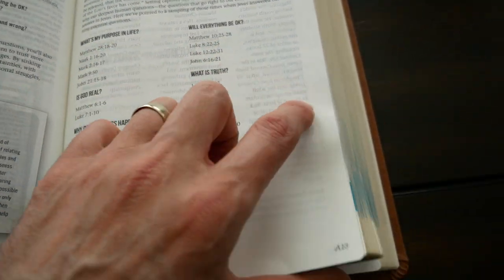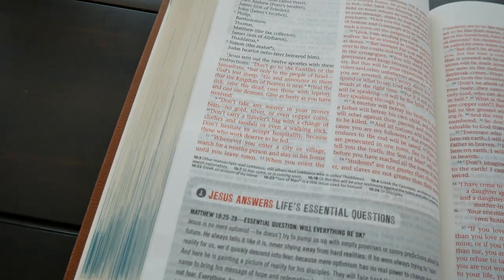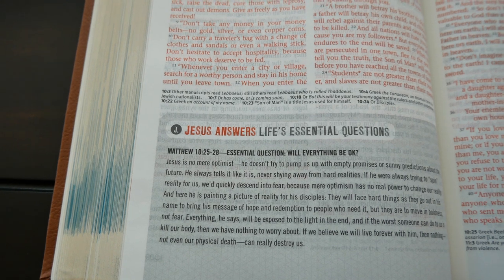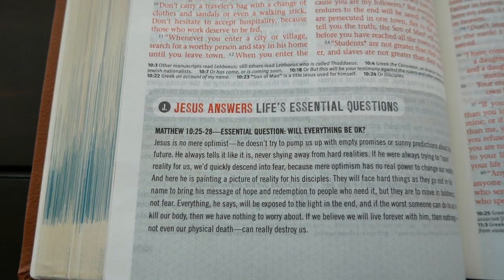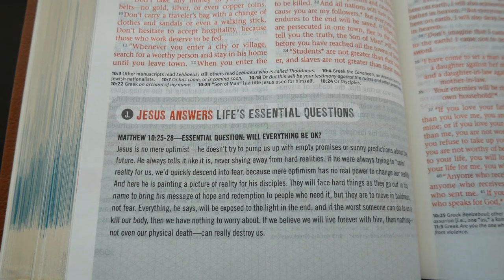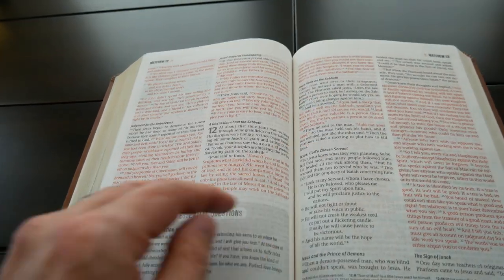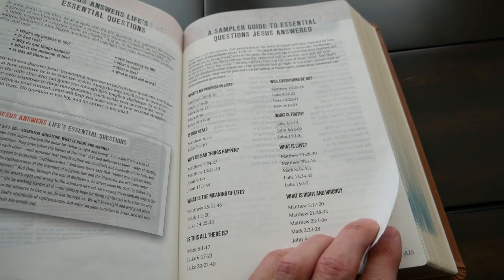And let's just choose one randomly here. Matthew 10, 25 through 28. If you go to Matthew 2, okay. Matthew 10, essential question. Will everything be okay? And then you can start reading. Jesus is no mere optimist. He doesn't try to pump us up with empty promises. And you have these throughout the Gospels. And these are the features that are special about this Bible.